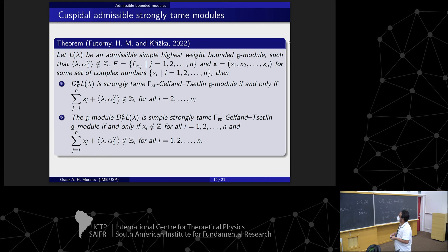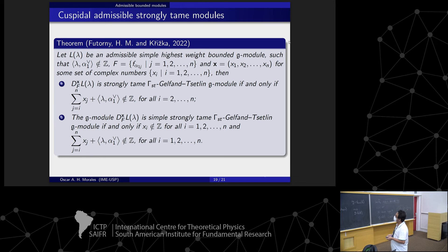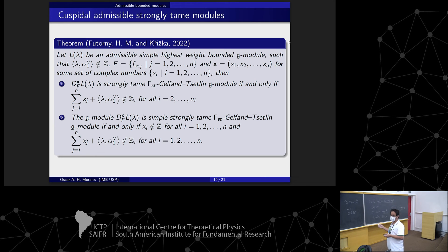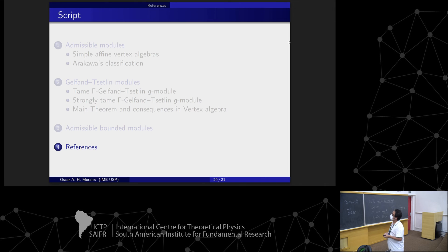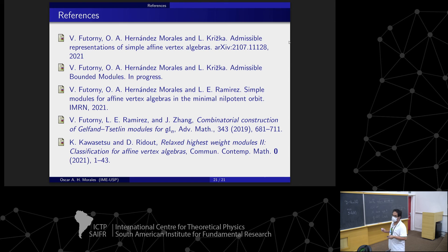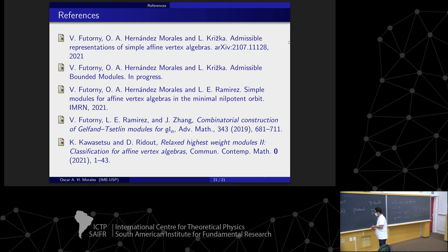M is strongly tamed under two conditions: this condition and this other condition. This is the answer to the question of when M is a strongly tamed Harish-Chandra module, or when M has a description of its basis and action using the classical twisted formula. The next step is: the inducing module of a cuspidal module is strongly tamed — that is the other question. But for now, this is all. Thank you.